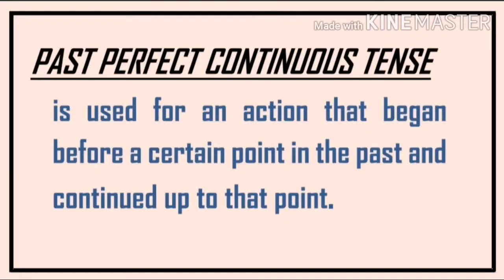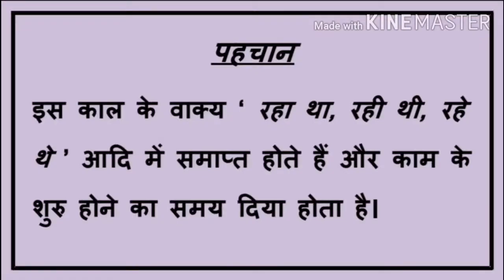The past perfect continuous tense is used for an action that began before a certain point in the past and continued up to that point. Past perfect continuous tense aise kaare ko vyaakt karta hai jo bhoot kaal mein aarambh ho kar bhoot kaal mein hi jaari raha ho. Pehchaan: is kaal ke vaakya 'raha tha', 'rahi thi', 'rahe the' aadi mein samaapt hote hain aur kaam ke shuru hone ka samay diya hota hai.